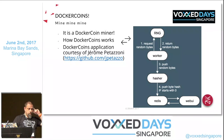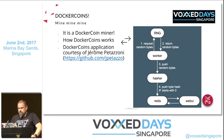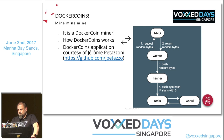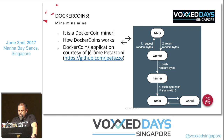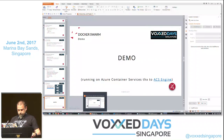Before the demo, the application I'll deploy is the same one across Swarm, Mesos, and Kubernetes: the Docker Coin application provided by Jérôme Petazzoni, one of Docker's main contributors. It's a good example of a typical micro-services application. It has a service called RNG running in Python, a worker in Ruby, another service in a different language, and a web UI running Node.js.